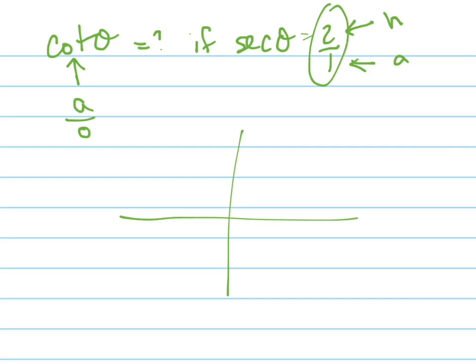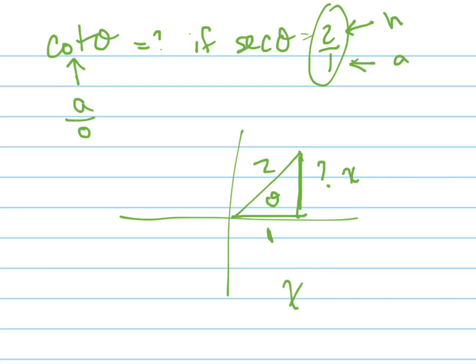Notice that this is positive, so I could draw it in the first quadrant. The hypotenuse is 2 and the adjacent is 1. So what's my opposite side? Here's my theta right here. Let's find the opposite side — let's call it X. X squared plus 1 squared equals 2 squared. That's the Pythagorean theorem. Which means X squared equals 4 minus 1, which is 3, so X equals the square root of 3.